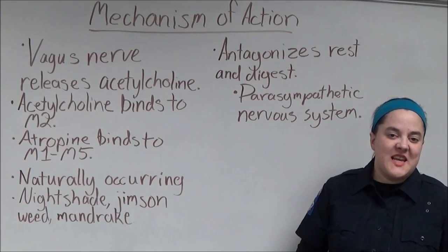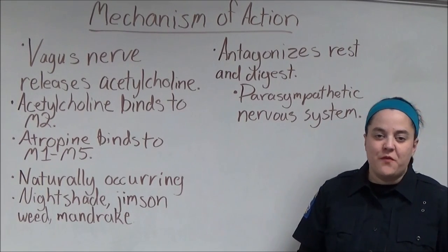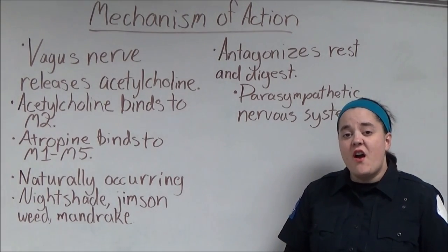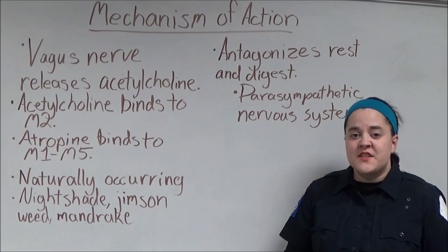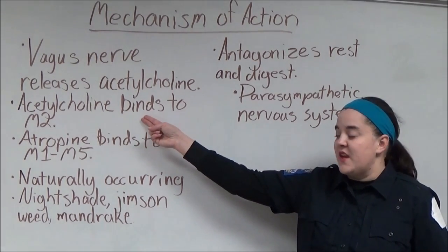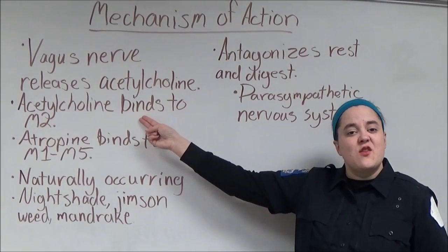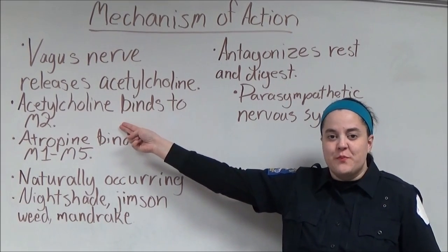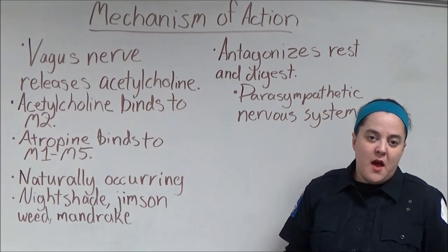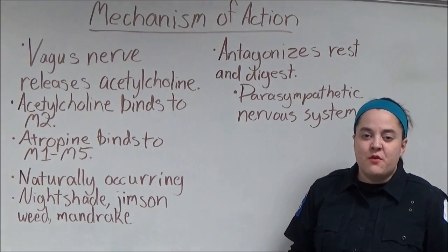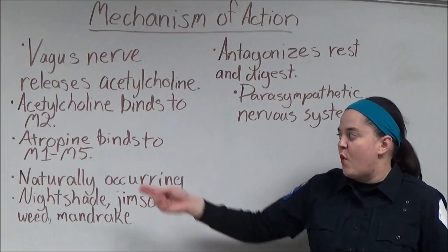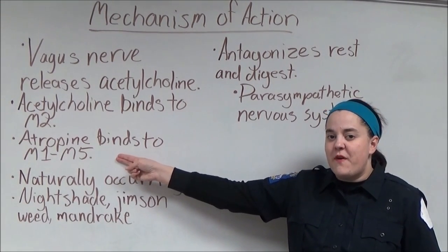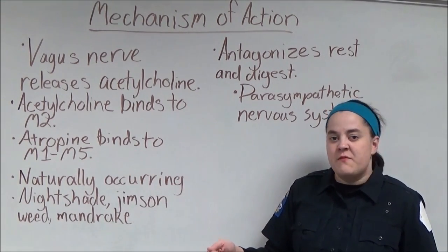Atropine essentially takes the brakes off of the parasympathetic nervous system in the heart. The vagus nerve releases acetylcholine, which binds to muscarinic receptor number two. Atropine, however, binds to muscarinic receptors one through five competitively, thereby effectively blocking acetylcholine from reaching the muscarinic two receptor.